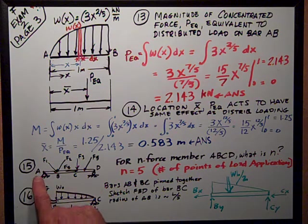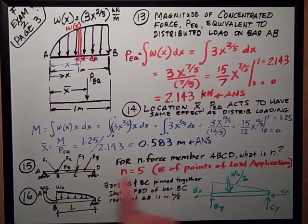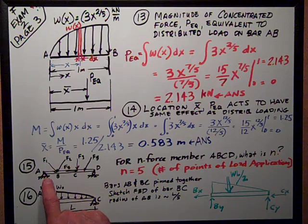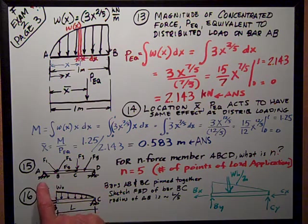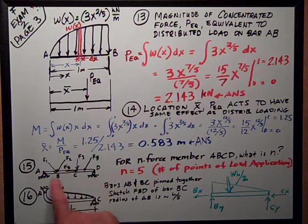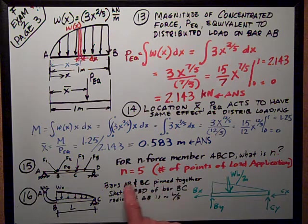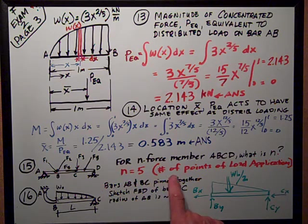Number 15 was an n-force member, where n is an integer. A, B, C, D is the name that the test gave that problem. I mean, they gave that bar, that member. And n really refers to the number of points of load applications. So, that's 1, 2, 3, 4, 5.